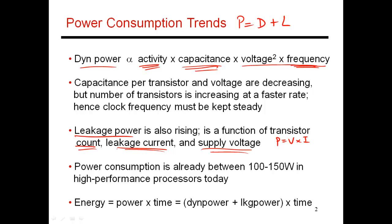If there's some leakage current slipping, the power being dissipated is a function of the supply voltage. We have to account for both dynamic and leakage power when reasoning about power consumption. This leakage component cannot be ignored — in many processors operating at typical utilizations, leakage can account for about 25% of total power.